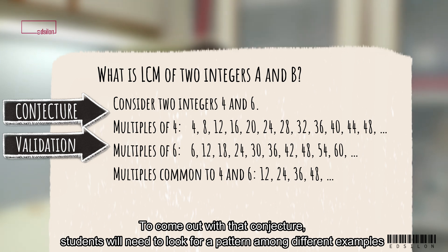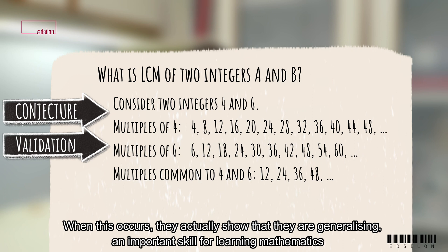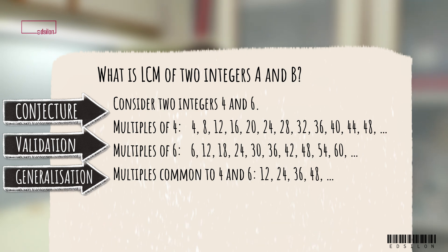To come up with that conjecture, students will need to look for a pattern among different examples, before noticing that they have to take the higher power of each prime factor of the integers. When this occurs, they actually show that they are generalizing. An important skill for learning mathematics.